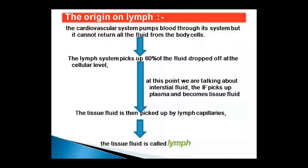This interstitial fluid picks up plasma and becomes tissue fluid. Plasma is picked up, interstitial fluid becomes tissue fluid, and this tissue fluid is then called lymph. This is the origin — from the cardiovascular system, interstitial fluid forms, becomes tissue fluid, and finally becomes lymph.